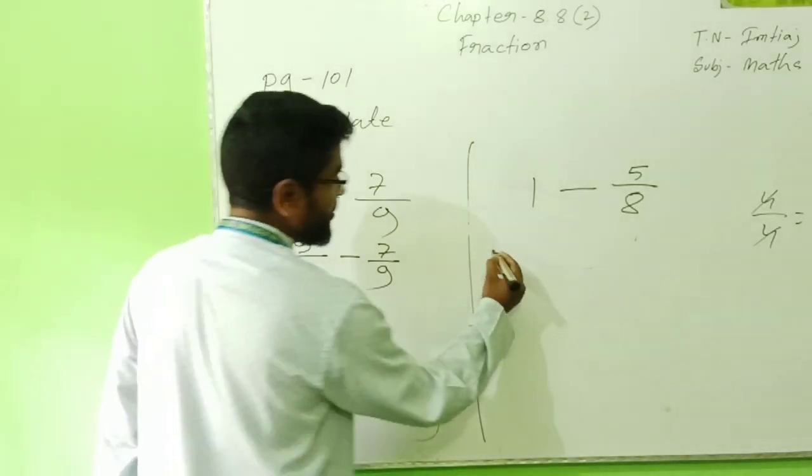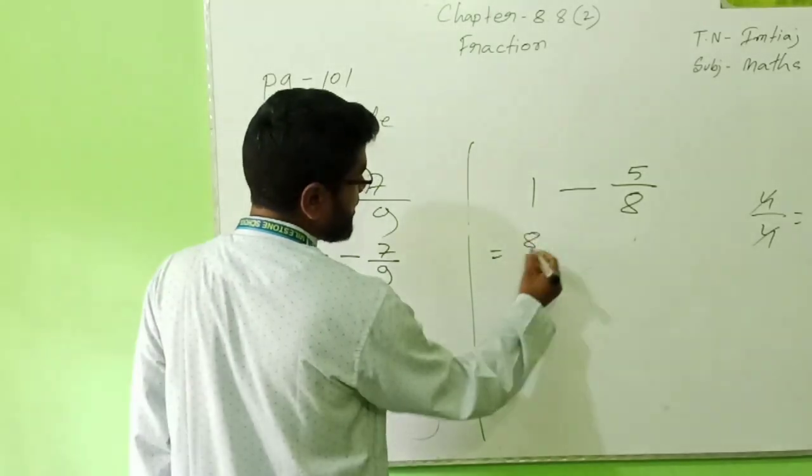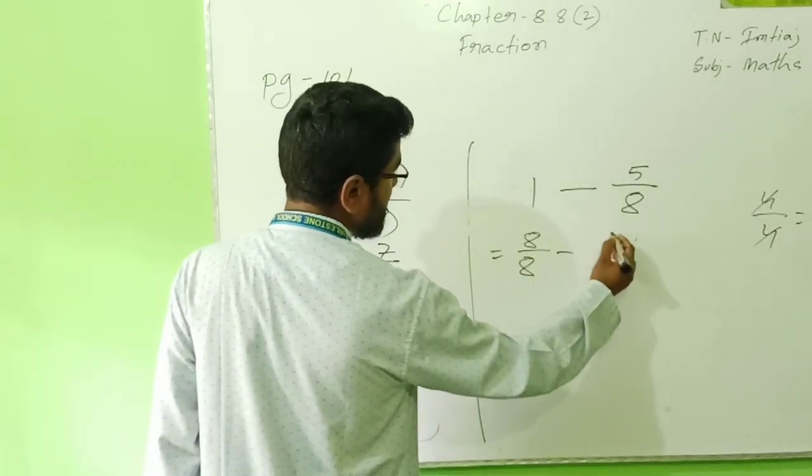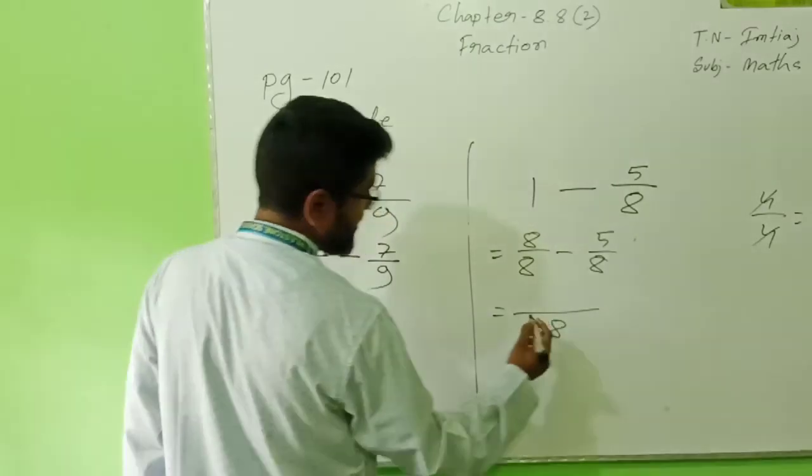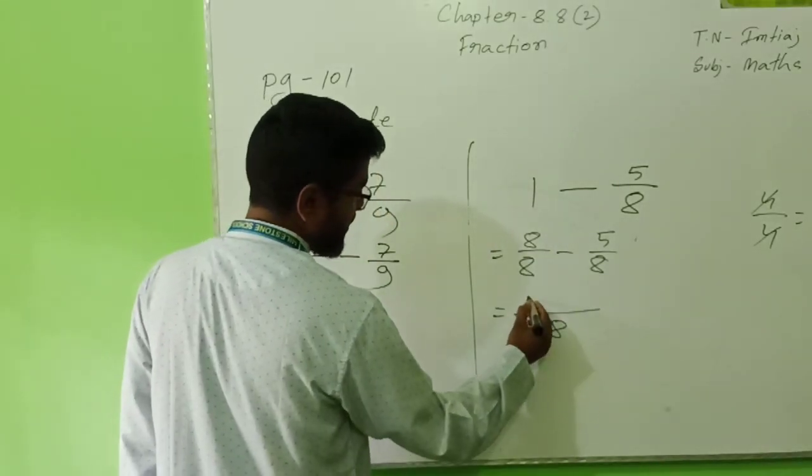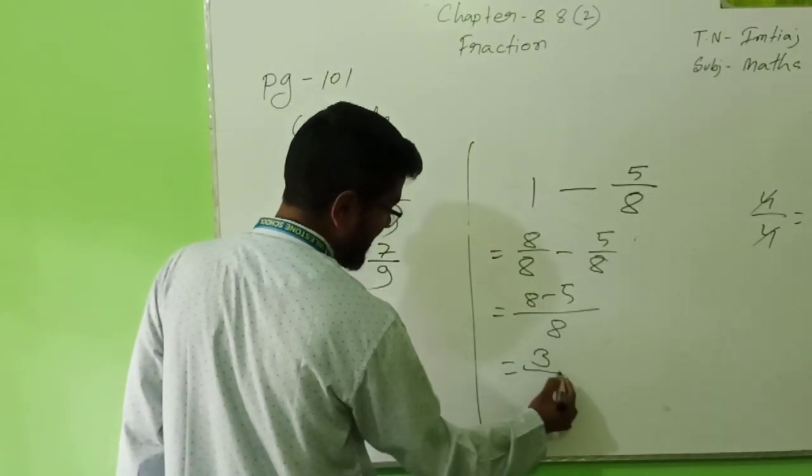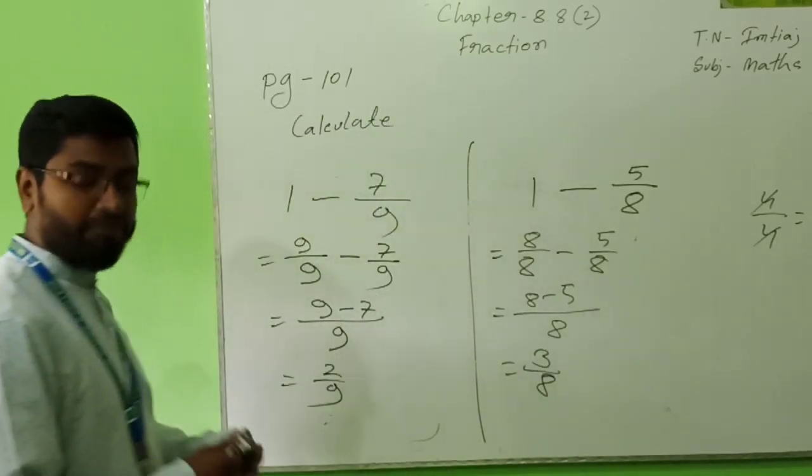Will I give you another math? 1 minus 5/8. What will be it? I can tell. If I subtract 8 minus 5, it will become 3. 3/8. How? So instead of 1, I wrote 8/8 minus 5/8. What will be here? 8 in down, 8 minus 5. Look, 3/8.